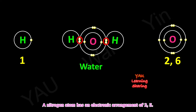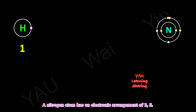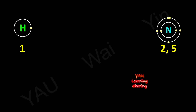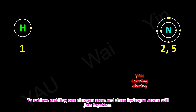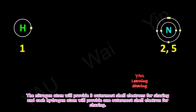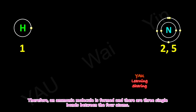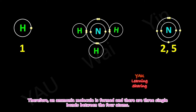A nitrogen atom has an electronic arrangement of two, five — three more electrons are needed to obtain the stable electronic arrangement of a neon atom. To achieve stability, one nitrogen atom and three hydrogen atoms will join together. The nitrogen atom will provide three outermost shell electrons for sharing, and each hydrogen atom will provide one outermost shell electron for sharing. Therefore, an ammonia molecule is formed, and there are three single bonds between the four atoms.